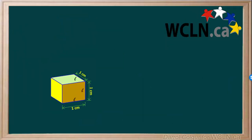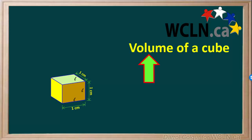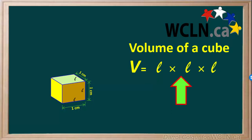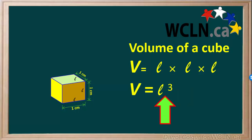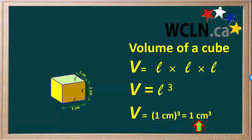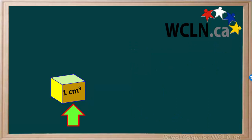Let's consider a cube which has a length of 1 cm on all sides. The volume of a cube is calculated using the formula V equals L times L times L, or V equals L cubed. Because L equals 1 cm, V is 1 cm cubed, which can also be called 1 cm³. So we'll remember the volume of this cube is 1 cm³.